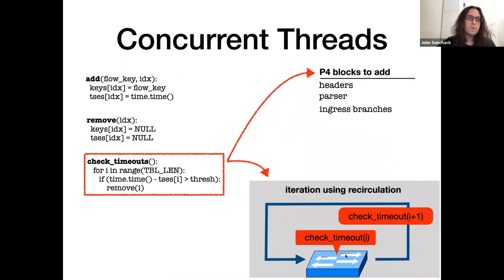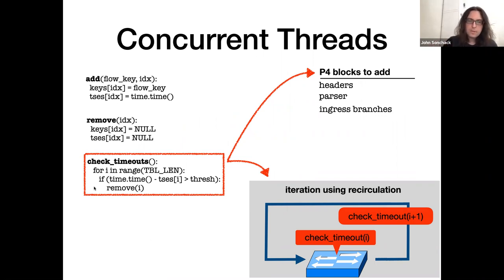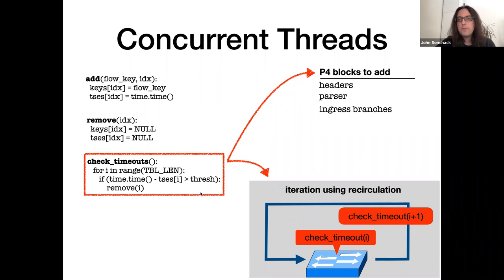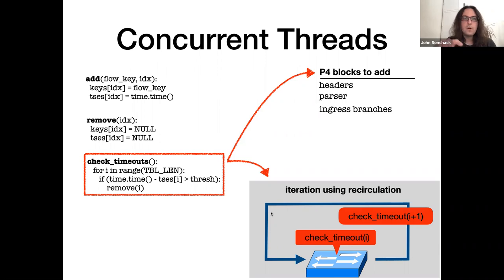Sometimes complicating things further, some of these operations are actually threads that execute over multiple packets. For example, your remove operation might be a check-timeout thread that periodically runs in the background to delete unused entries in your table. To implement threads, you have to make changes scattered throughout your P4 program. To implement a thread that scans for timeouts using packet recirculation, you have to add new headers and parsers for the recirculated packets and carefully interleave their processing with normal data plane packets. It's a lot of work.